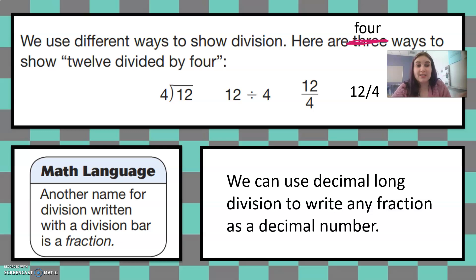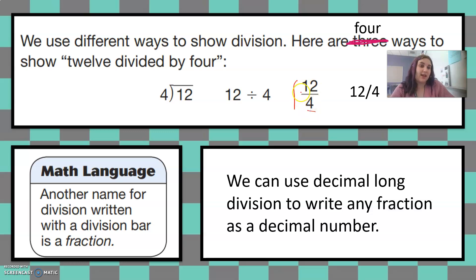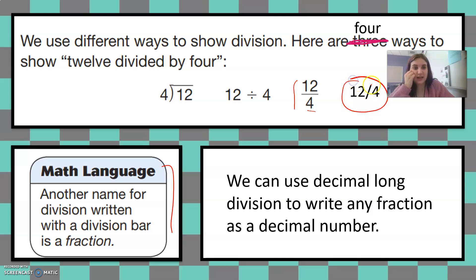We also see the division symbol — 12 divided by four. It's this little bar with the two dots. And then we also see the fraction bar, so 12 divided by four written with a fraction bar. Another name for division written with a division bar is a fraction. And when we use the computer, sometimes you'll see fractions written with this division bar or fraction bar kind of next to it, because that's the way it comes out when you use the slash on the computer.